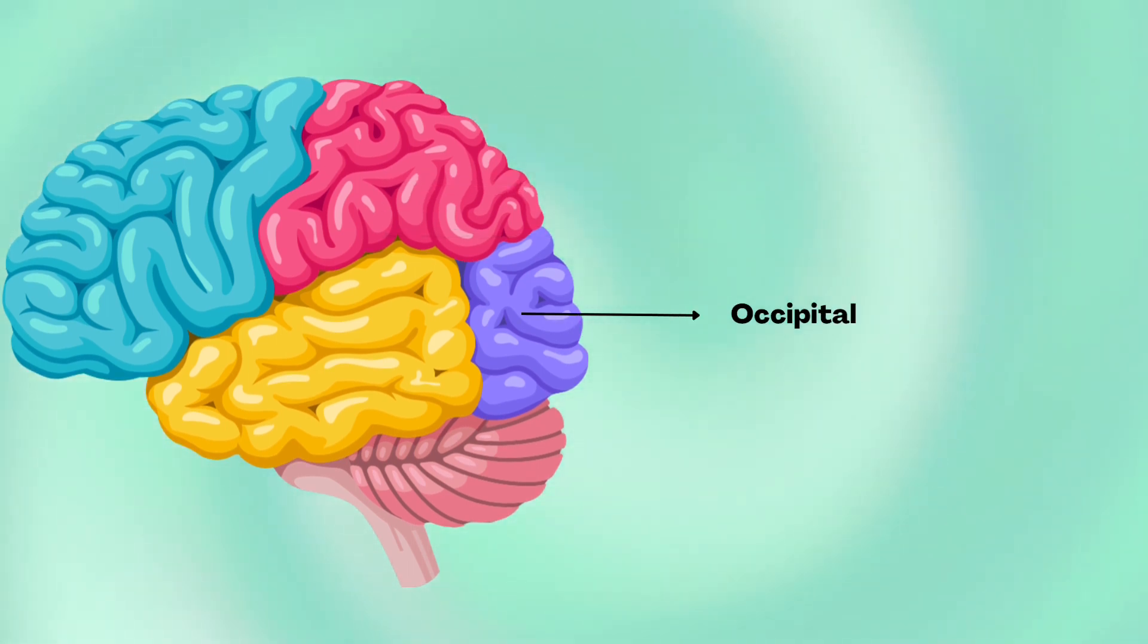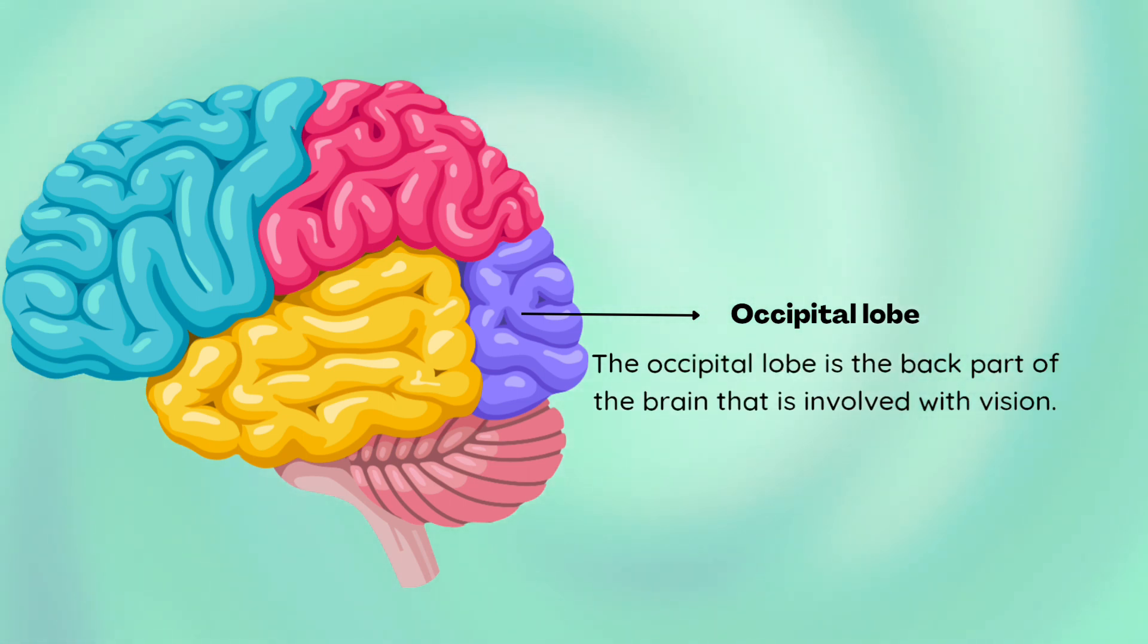Occipital lobe - the back part of the brain that is involved with vision.